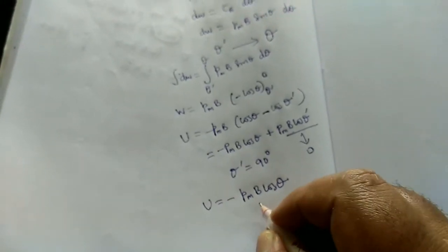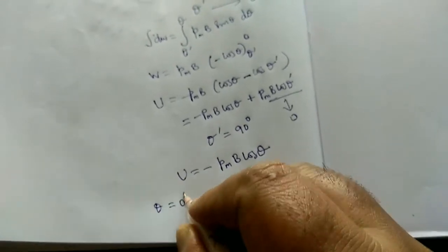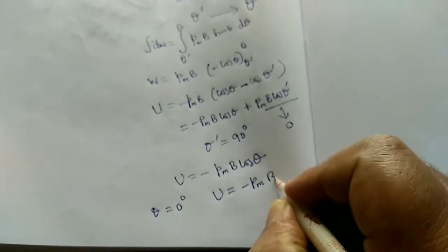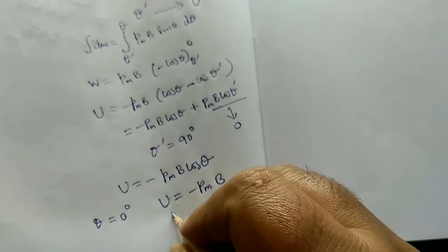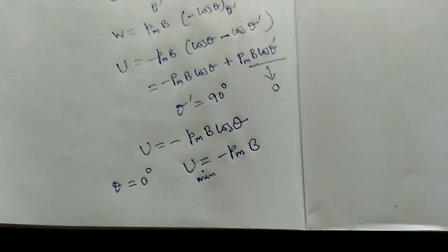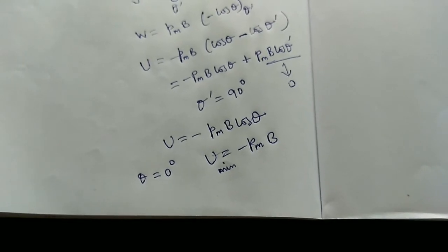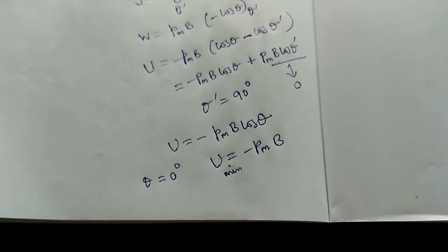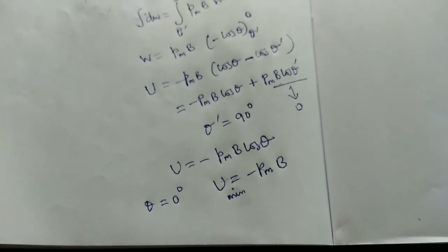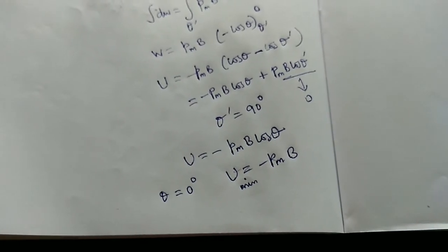That is the expression for potential energy of the bar magnet. Suppose theta is 0 degrees, then U equals minus PmB, since cos 0 equals 1. This is called the minimum value of potential energy. When the magnet is aligned parallel to the magnetic field, theta is 0 degrees, the potential energy is minimum — the magnet is in a stable position.